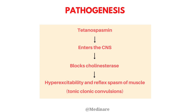Tetanospasmin can enter the perineural sheath and through it reach the central nervous system, blocking the cholinesterase enzyme at the anterior horn cells. This causes hyperexcitability and reflex muscle spasm, leading to tonic-clonic convulsions. Importantly, once the toxin is fixed in nerve tissue it can no longer be neutralized, even if antitoxin is administered.